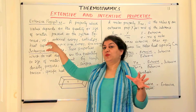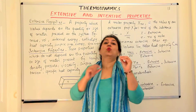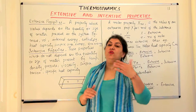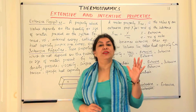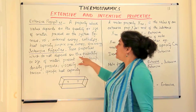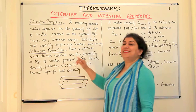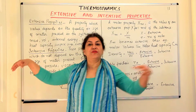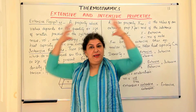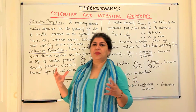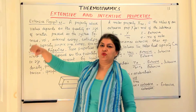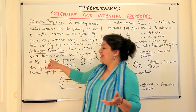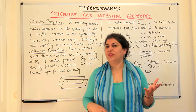So what do we understand from this? Extensive properties are those properties which depend on the quantity of a substance, and intensive properties are the opposite — those properties that do not depend on the quantity or size of matter present. For example, temperature — is the temperature of one arm different from the other arm? Temperature does not depend on how much the body weighs; it does not depend on the quantity of the substance.